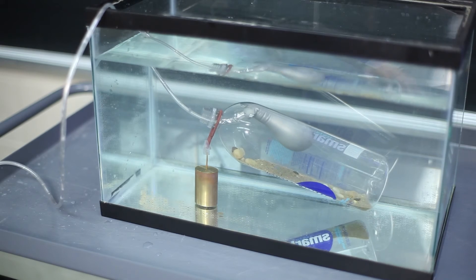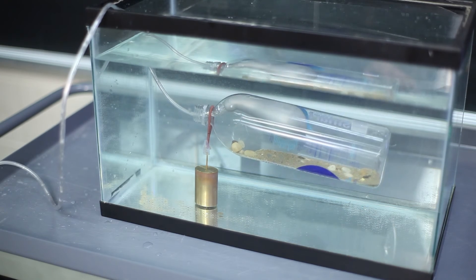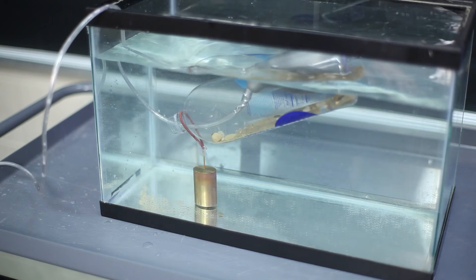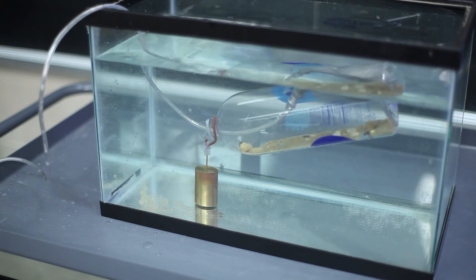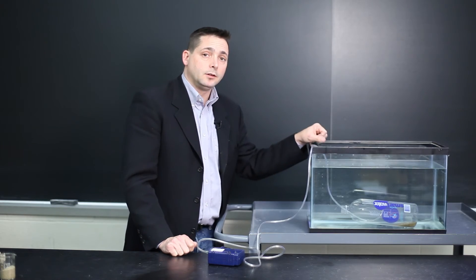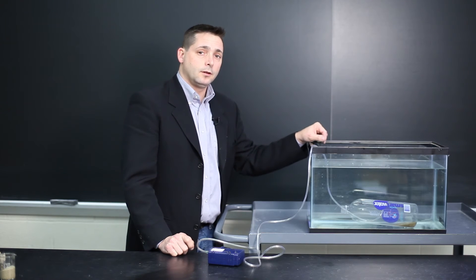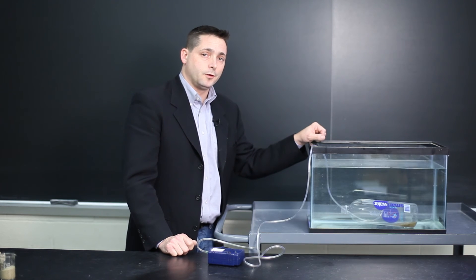As the balloon expands, the density of the bottle will become less as more water leaves the bottle and air goes in. As soon as the density of the bottle is less than the surrounding water, it will become buoyant and will float to the surface, just like a submarine.